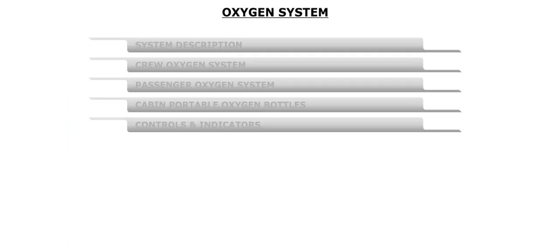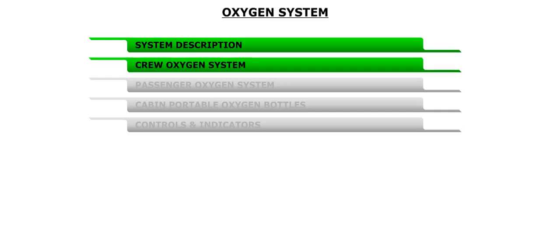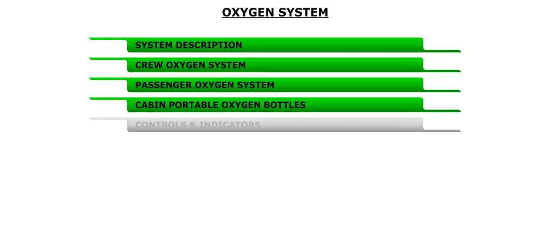In this module, we will look at the oxygen system installed on the aircraft. First, we will start out with a brief system description. Next, we will look at the crew oxygen system, the passenger oxygen system, and the cabin portable oxygen bottles. Finally, we will review the controls and indicators associated with the oxygen system.